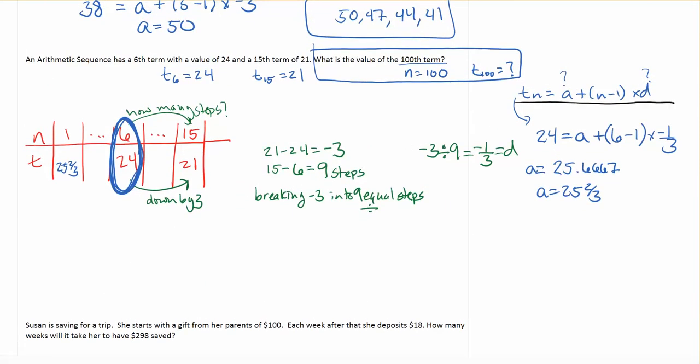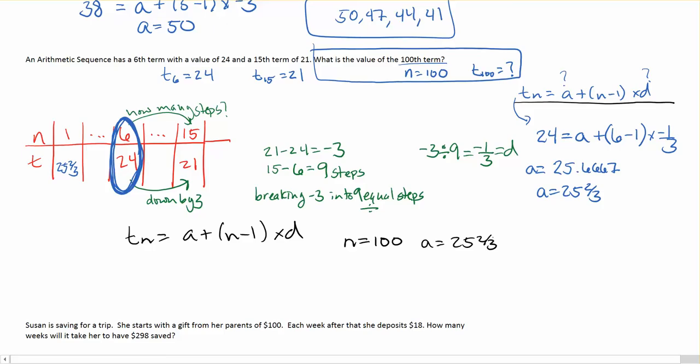So, now that I know that a is 25 and 2 thirds, I need to figure out what the hundredth term is. So, I'm going back up here and saying, what were they actually asking me? Let's figure out what that is. Give myself some more space here. I found a. I know d. So, now I've got enough information that I can use my formula properly.